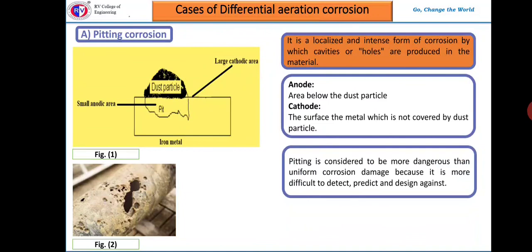A large cathodic area puts up a high demand for electrons that have to be generated by the small anodic area, so the metal gets oxidized rapidly — almost like digging a pit at the anodic area. Pitting is considered more dangerous than uniform corrosion because it is more difficult to detect, predict, and design against, as seen in the figure where corrosion occurs mainly due to pitting.